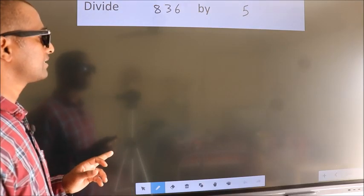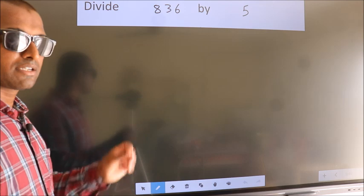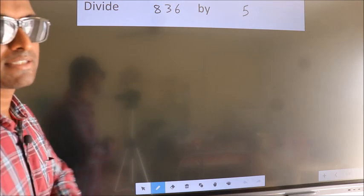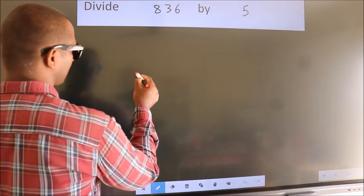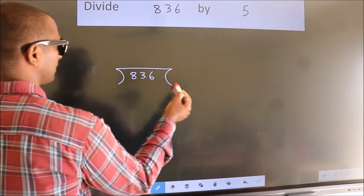Divide 836 by 5. To do this division, we should frame it in this way. 836 here, 5 here.